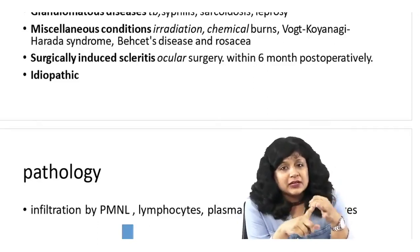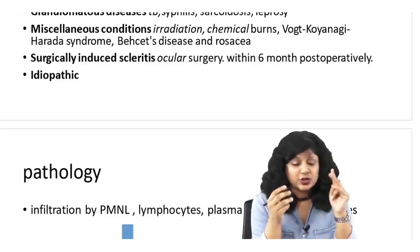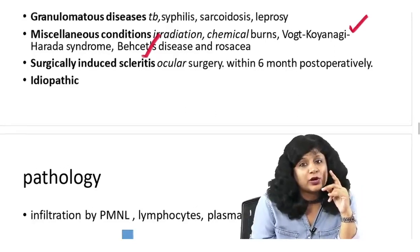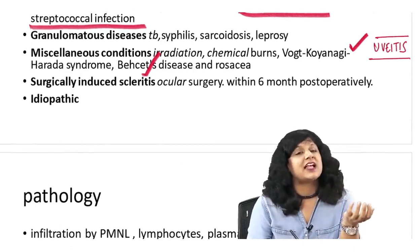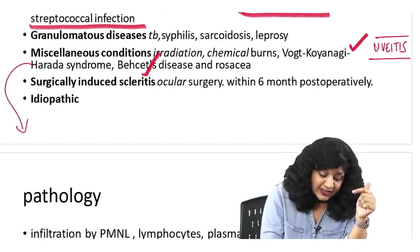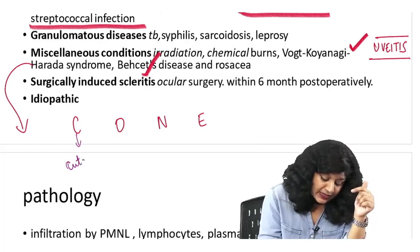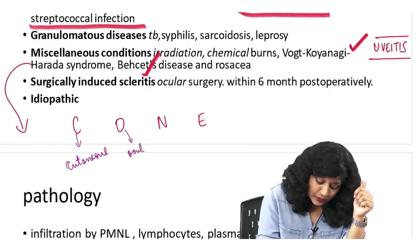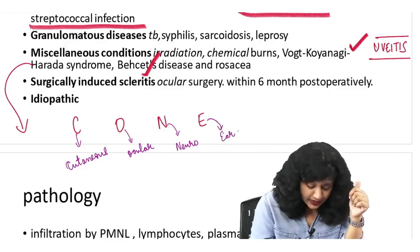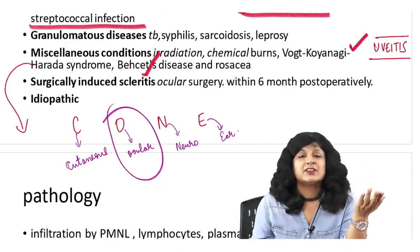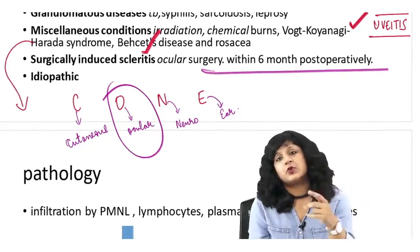Miscellaneous conditions include radiations, chemical burns, Vogt-Koyanagi-Harada (VKH) syndrome, and Behcet's disease. VKH and Behcet's are important because we read them in uveitis. In VKH, the mnemonic CONE: Cutaneous involvement, Ocular involvement, Neurological involvement, and Ear (audio-logical) involvement. In this we get scleritis. In Behcet's, we get the triad: oral ulcers, genital ulcers, and uveitis. Surgically, any surgery within 6 months can induce scleritis.